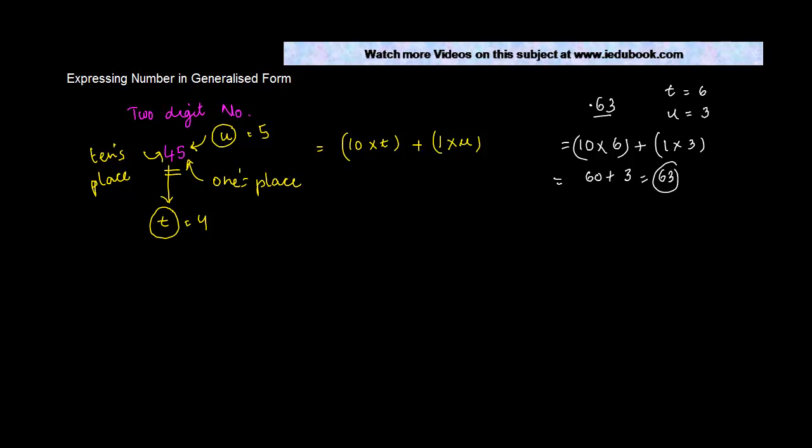So basically we can express a two-digit number in a generalized form as 10 into t plus 1 into u.